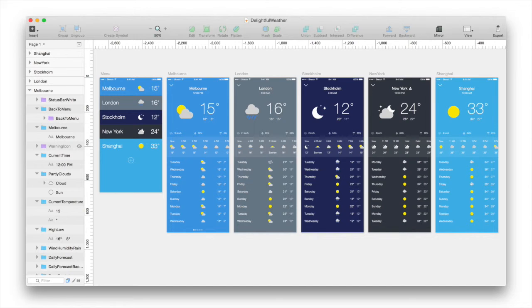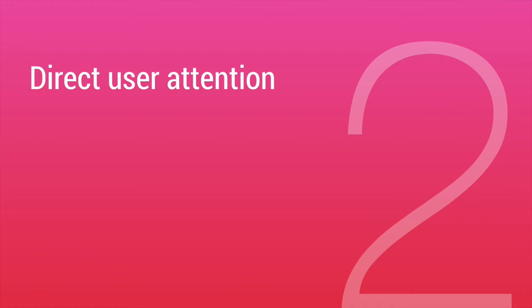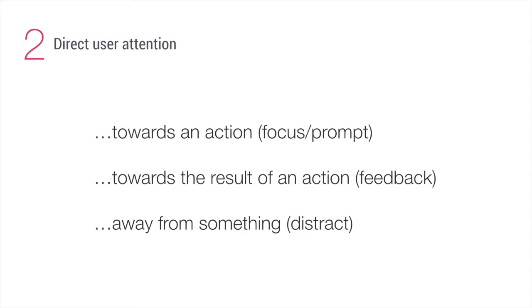I designed these basic screens in Sketch, but I'm not a designer and I often create prototypes directly in Keynote using simple shapes, colors, and images — that's perfectly fine too. The second point I want to look at today is directing user attention. There are three main aspects: directing user attention towards an action, directing them towards the result of an action, and directing user attention away from something you don't want them to notice.